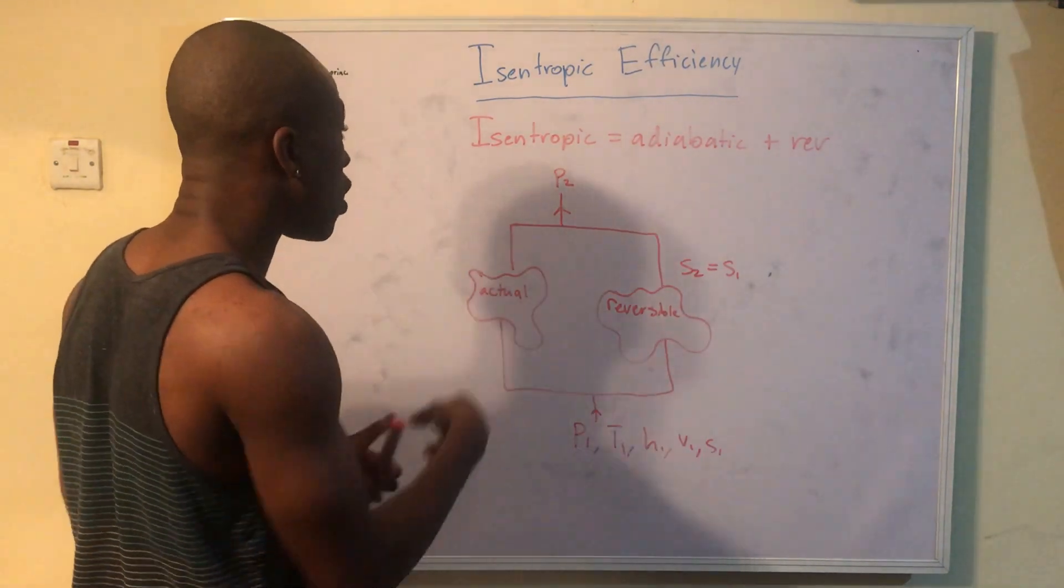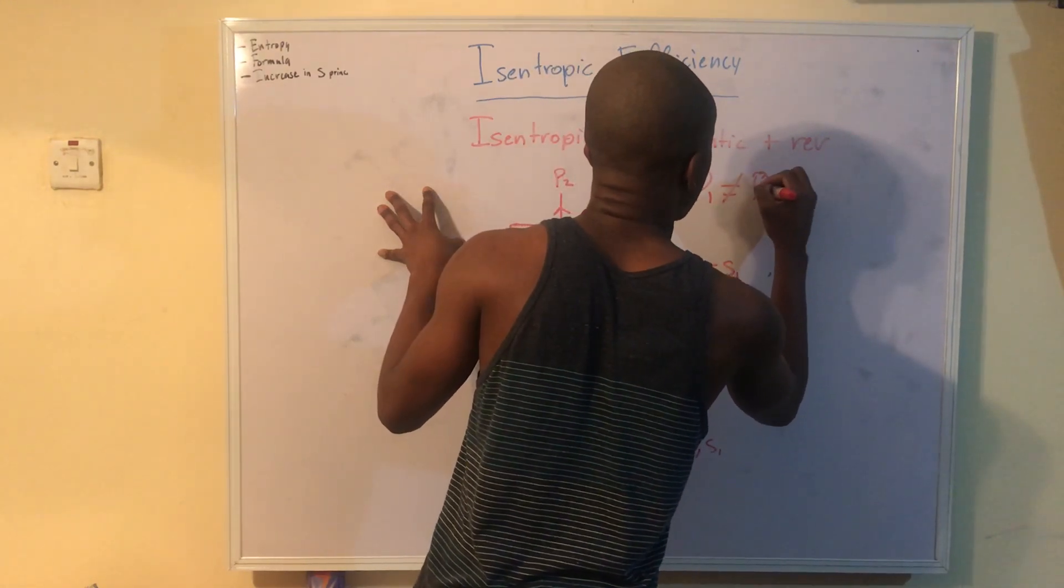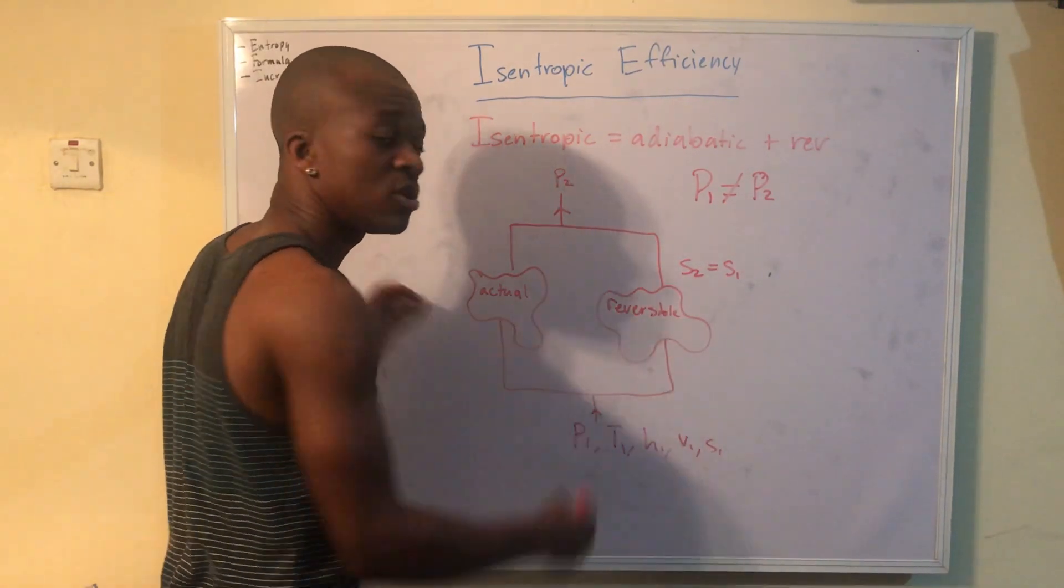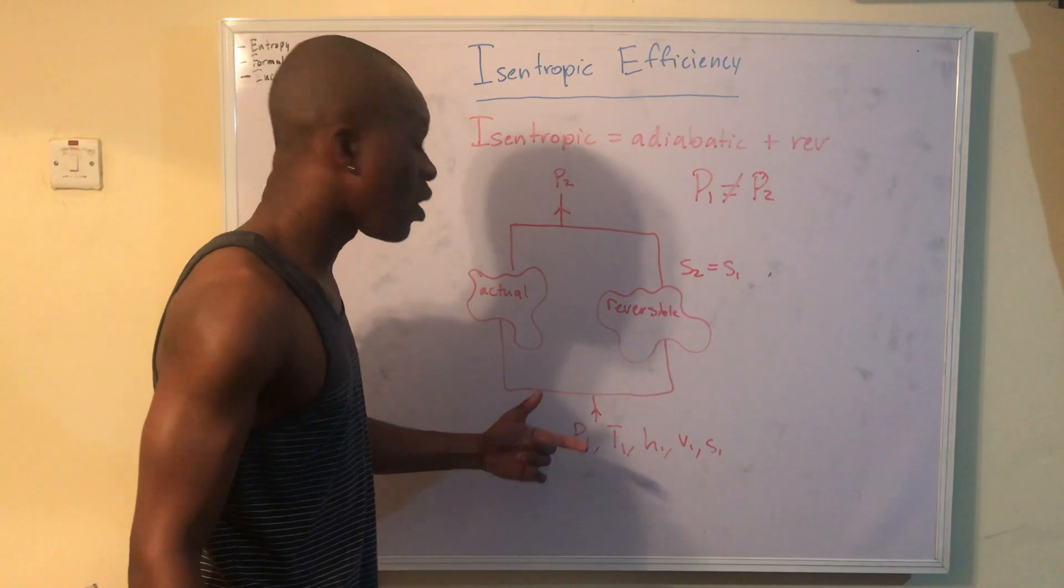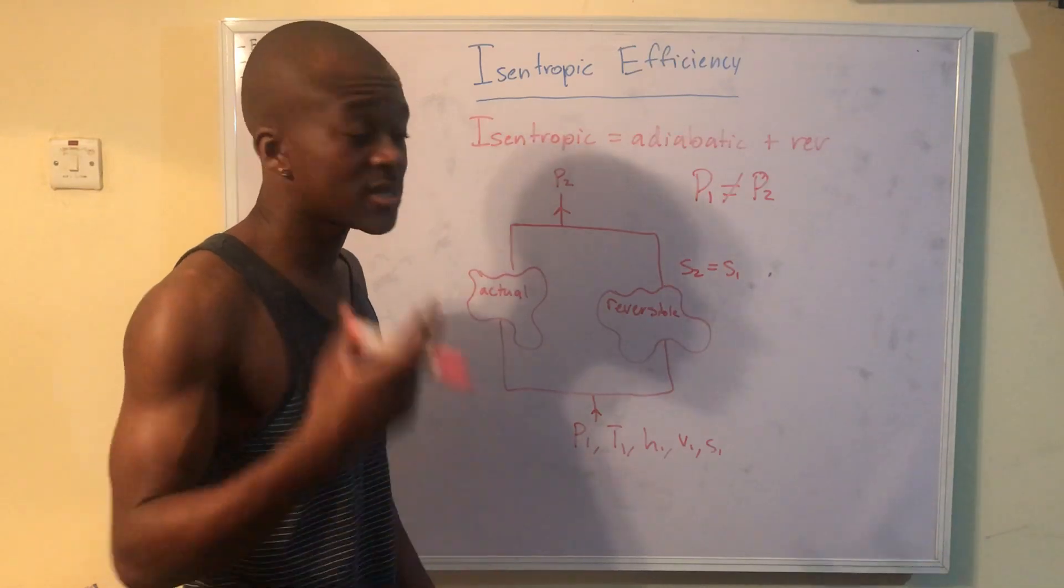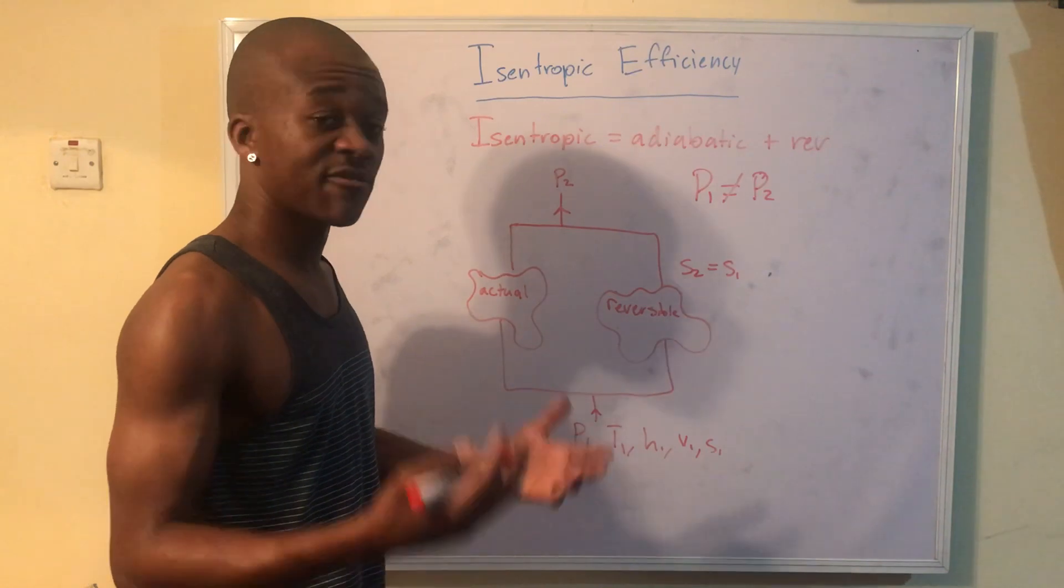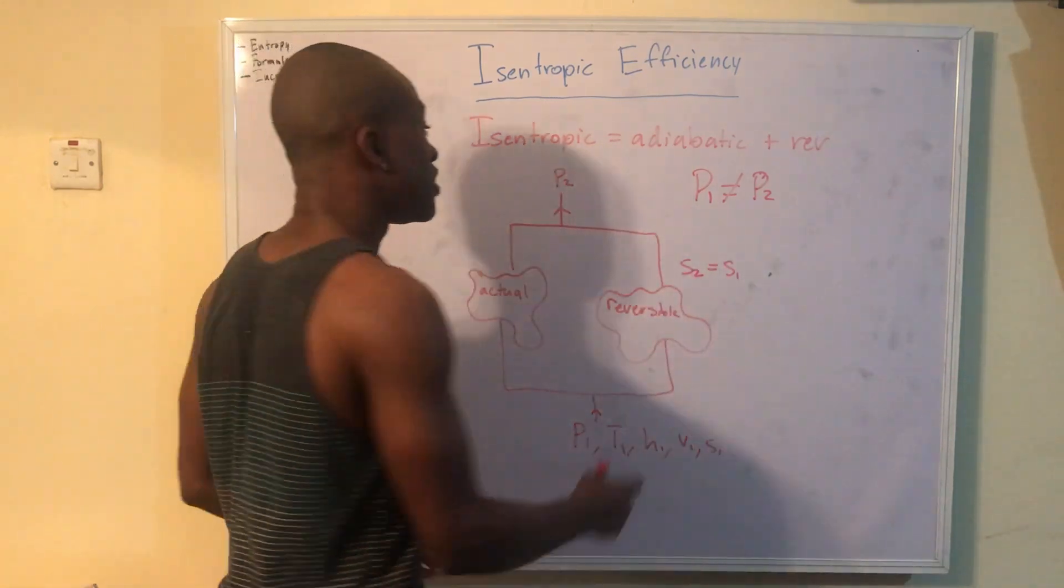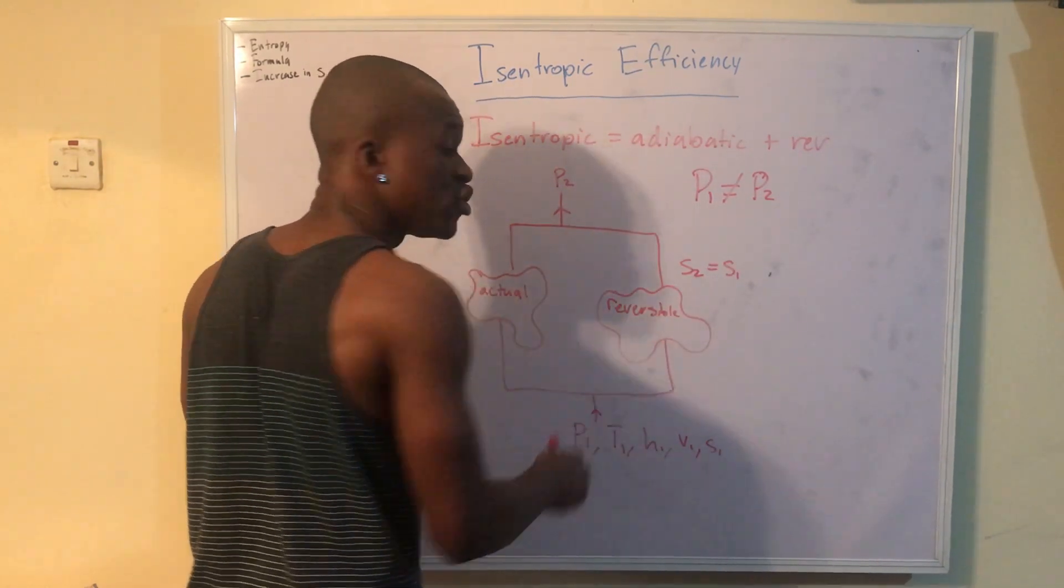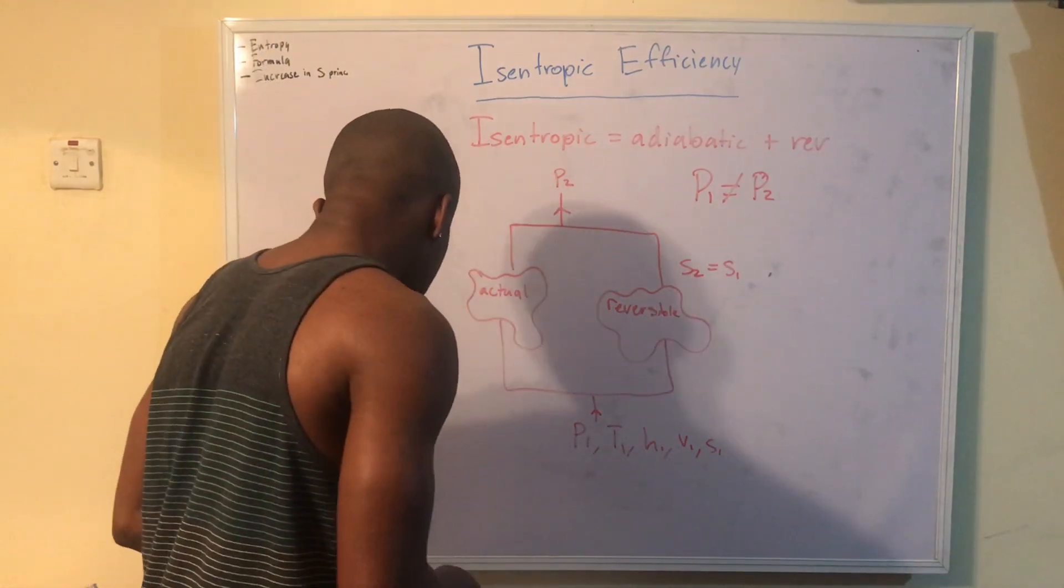And this also, note that P1 is not equal to P2. Just P2 for both the actual and reversible devices are equal, and P1 for both the actual and reversible devices are equal. I've made this mistake in an exam. It was so painful because I couldn't do the problem because I didn't realize that they had the same outlet pressures. For whatever reason, I thought they were different. But just keep that in mind.